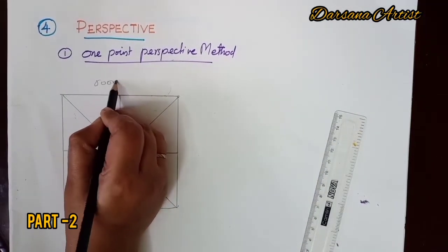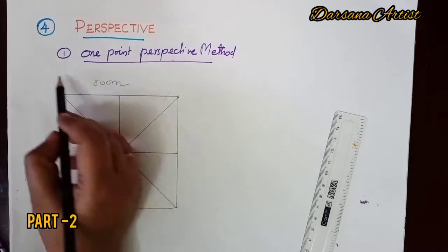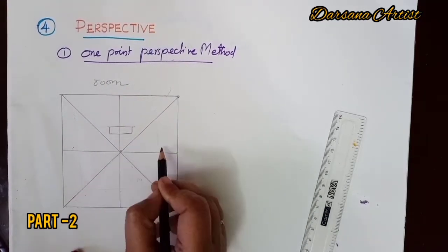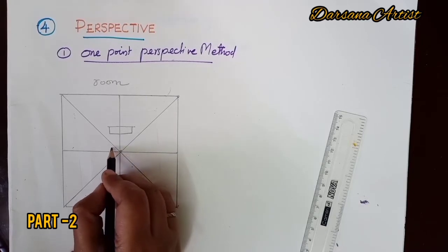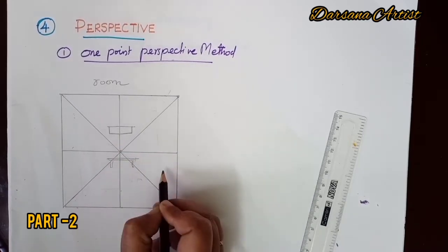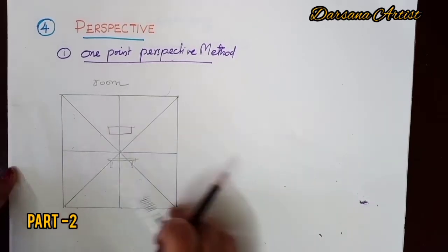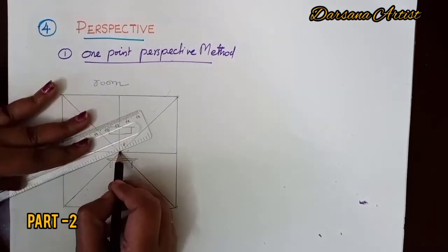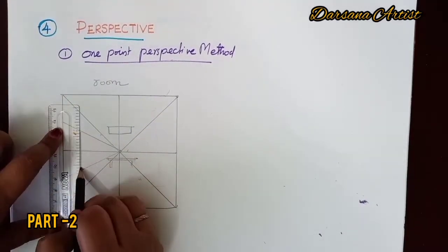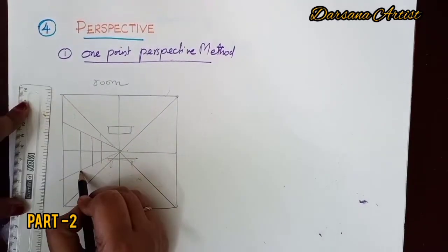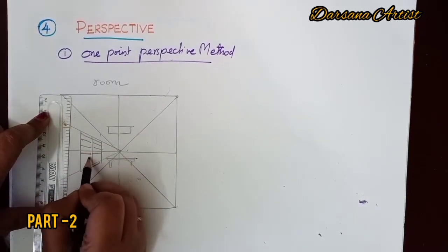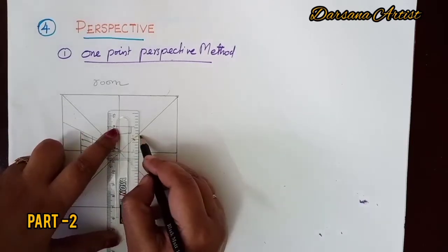Here is the square. This is a square — 5cm. This is the room. This is the drawing and painting. This is the first picture showing depth and volume.